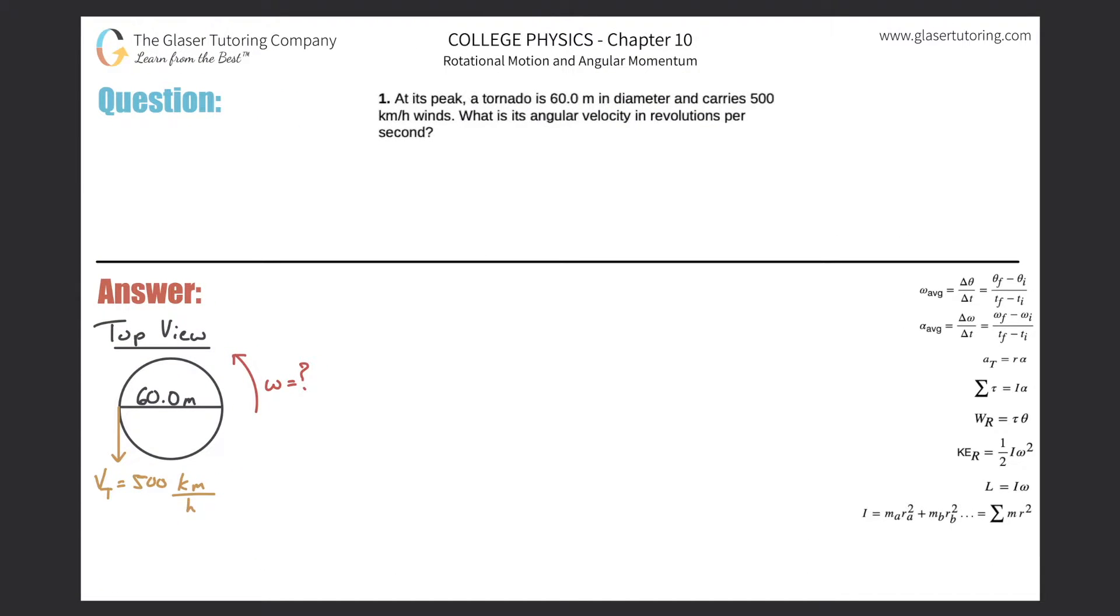At its peak, a tornado is 60 meters in diameter and carries 500 kilometer per hour winds. What is its angular velocity in revolutions per second? Alright, so I have a little picture drawn over here. We're taking the top view of the tornado, meaning pretend that you're in the clouds looking down.